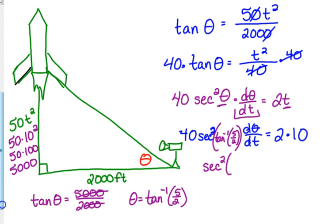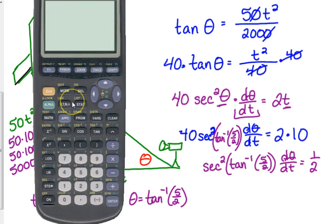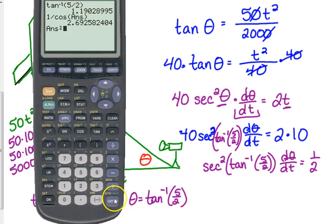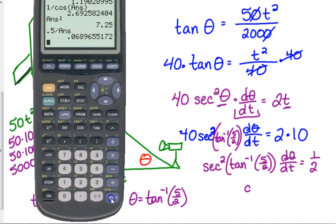So we have secant squared of the inverse tangent of 5 over 2, dθ/dt. I'm going to divide by the 40, so that's equal to 1 half. 20 divided by 40. Now we'll pull out the calculator and evaluate what this number is. I'm going to make sure I am in radian mode. You always want to be in radian mode. So inverse tangent of 5 over 2. Then we are doing the secant. Well, I don't have a secant button, so I have to do 1 over the cosine of that number. And it is squared. And then 1 half divided by that is our dθ/dt.